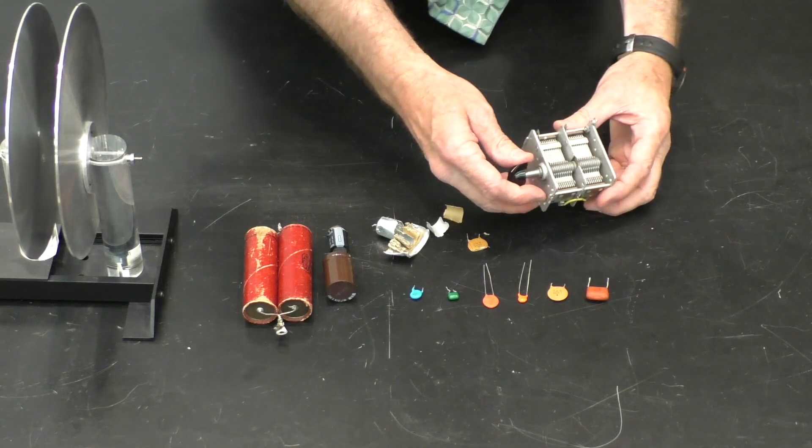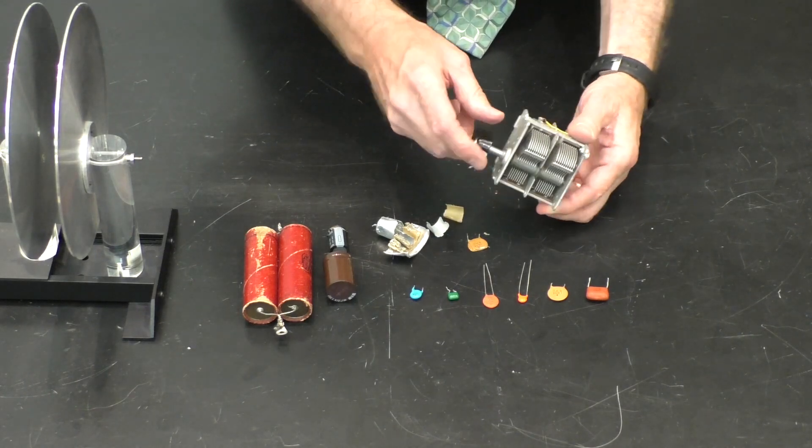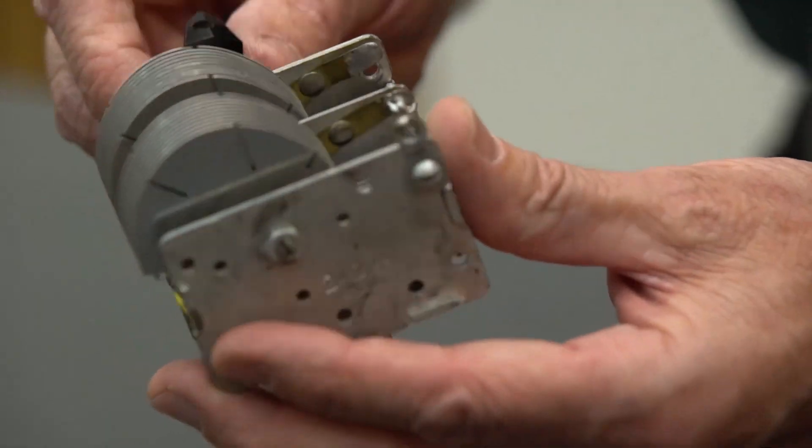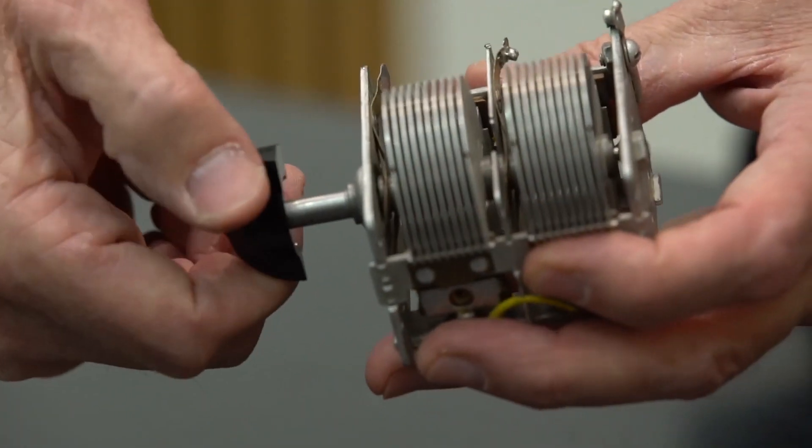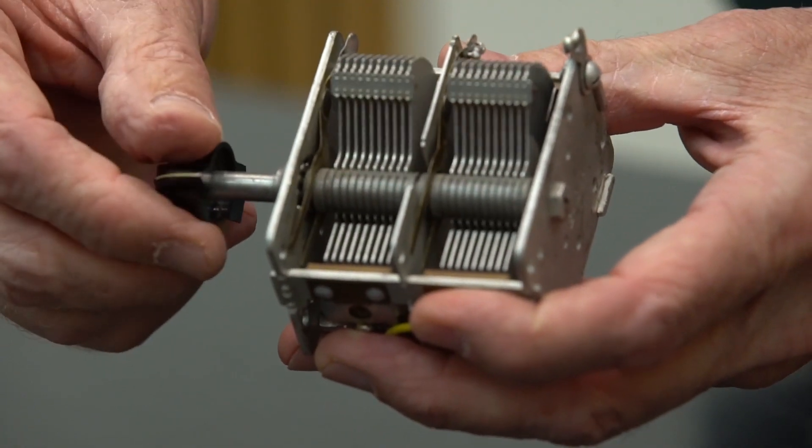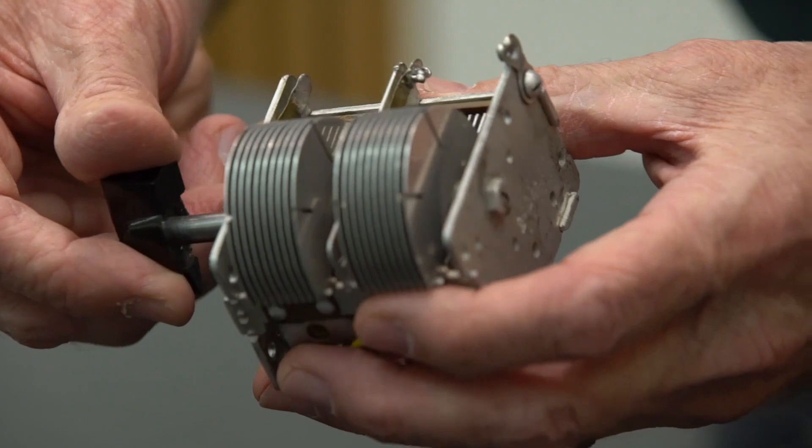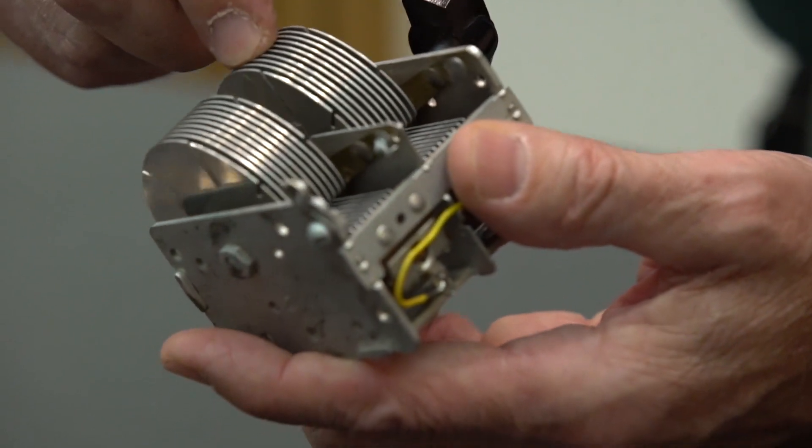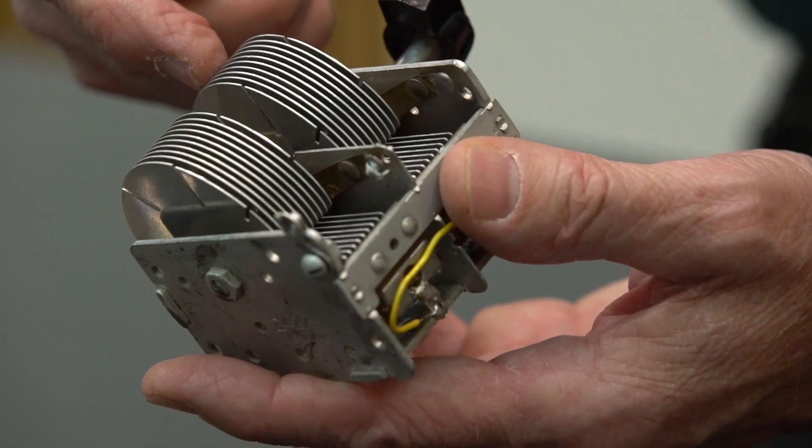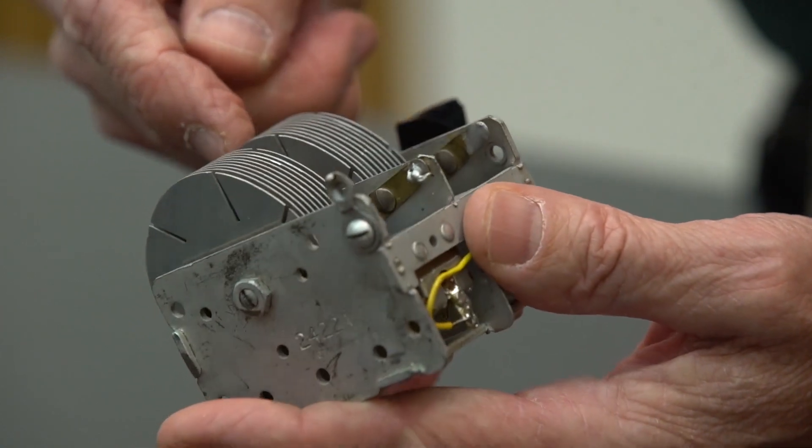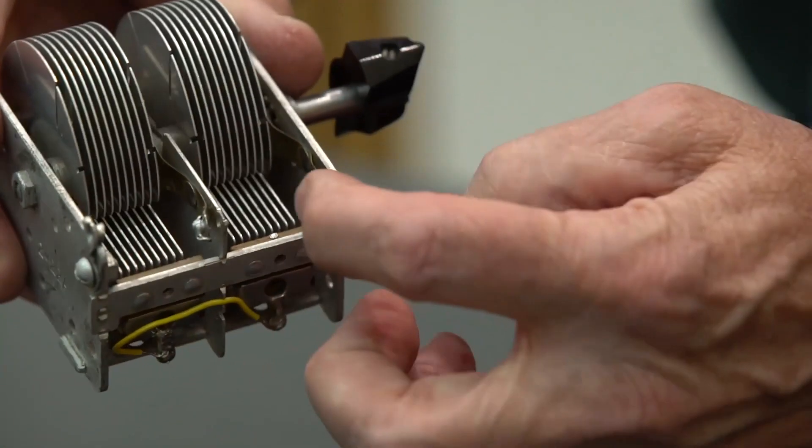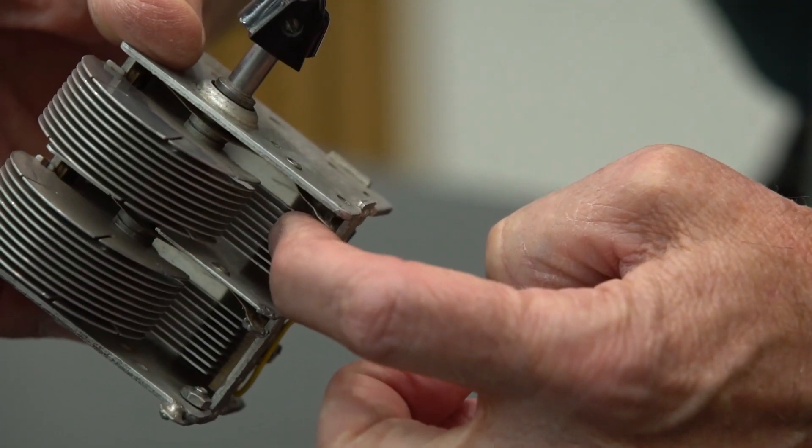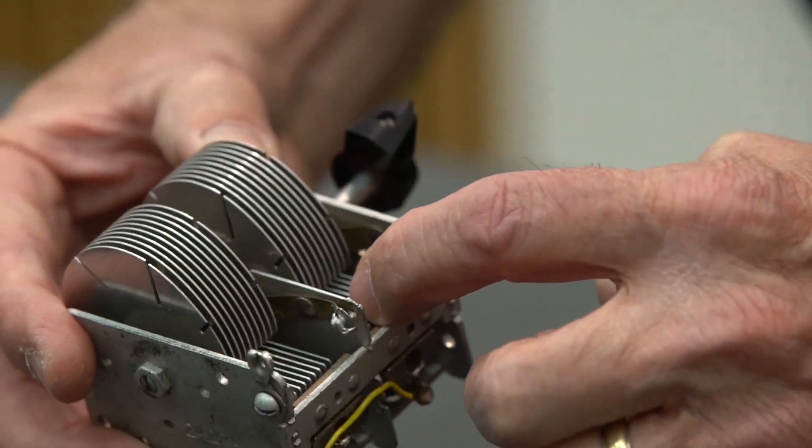This is what's known as a variable capacitor. In this position, there's a knob that helps you determine how much capacitance you have. In this particular position, these plates, which hold, say, a positive charge, are not overlapping with these other plates here that have negative charge.